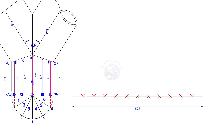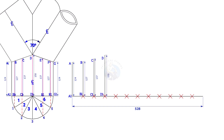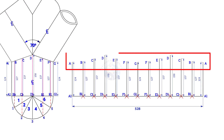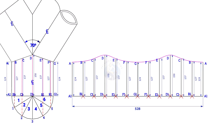Draw a perpendicular line at the starting of this line. The length shall be 124 millimeters. Similarly, draw lines B, B1, C, C1, etc. Draw a smooth curve starting from A to A. You may need to add or reduce additional length to achieve the required length of the header.